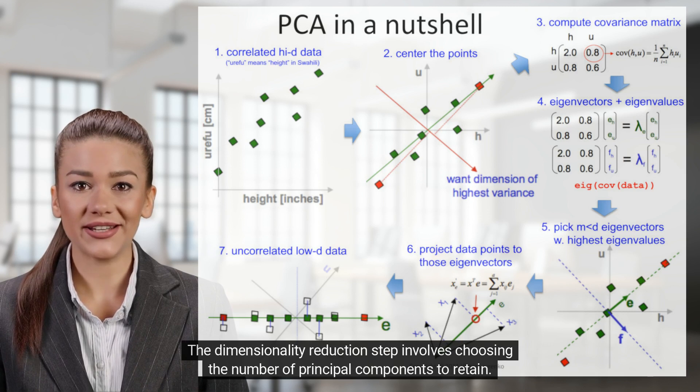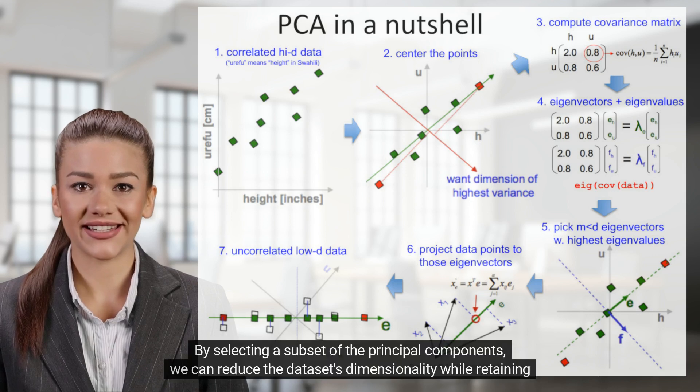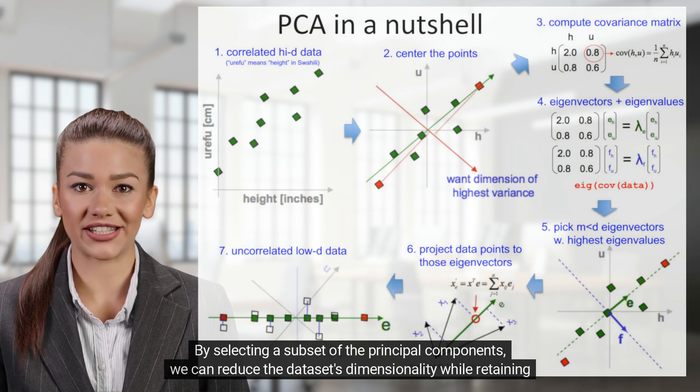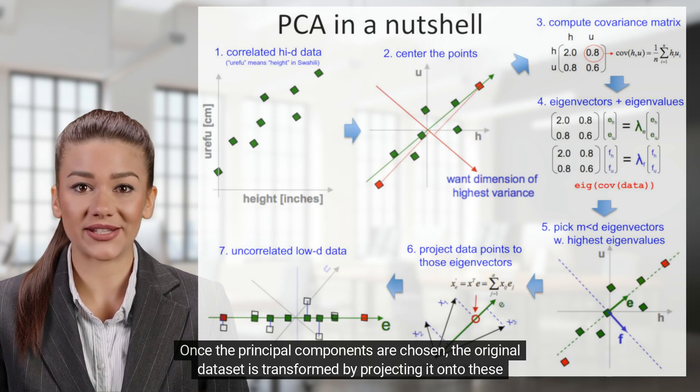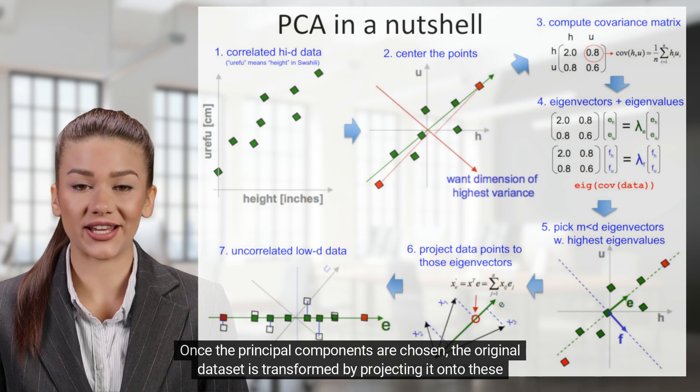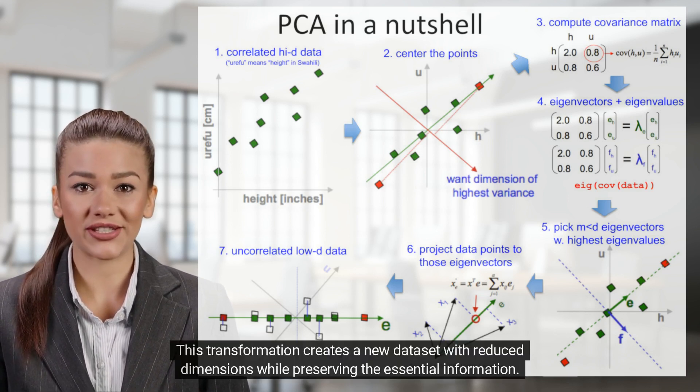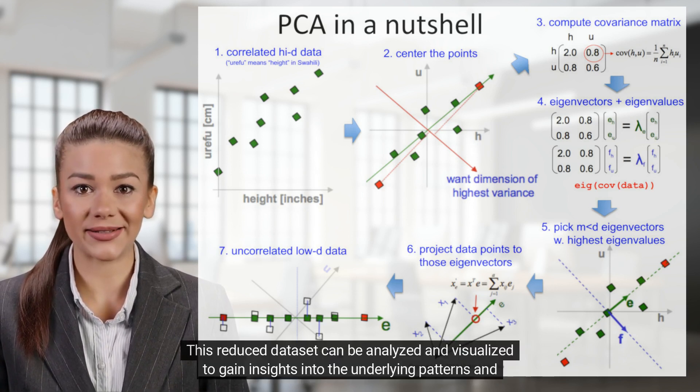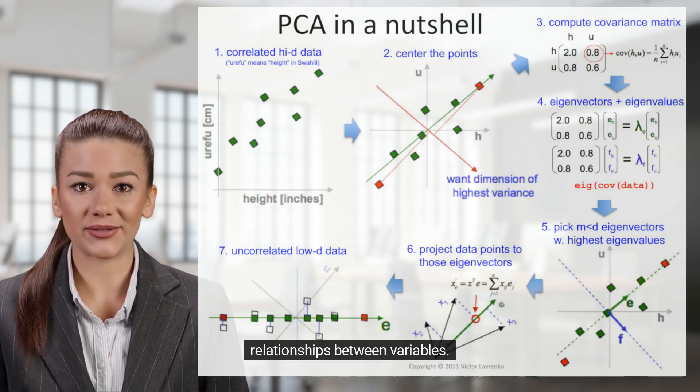The dimensionality reduction step involves choosing the number of principal components to retain. By selecting a subset of the principal components, we can reduce the dataset's dimensionality while retaining the most important patterns and minimizing information loss. Once the principal components are chosen, the original dataset is transformed by projecting it onto these components. This transformation creates a new dataset with reduced dimensions while preserving the essential information. This reduced dataset can be analyzed and visualized to gain insights into the underlying patterns and relationships between variables.